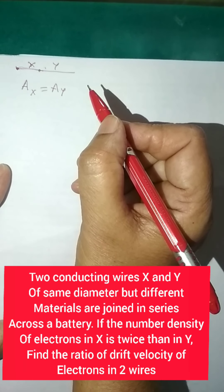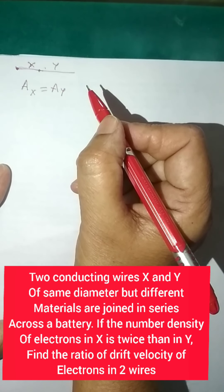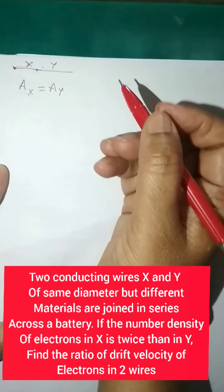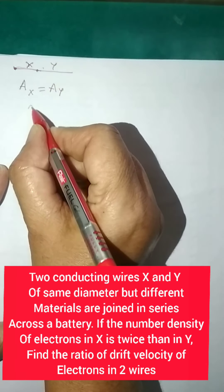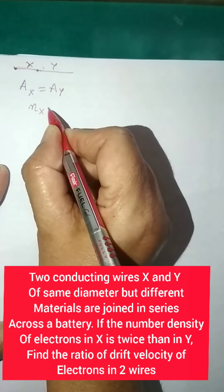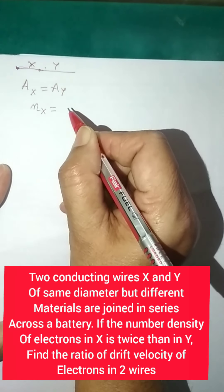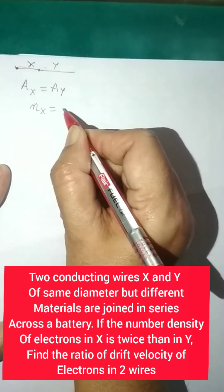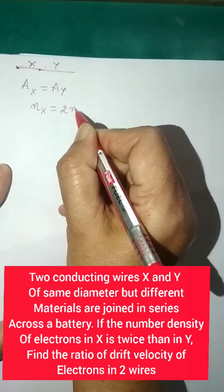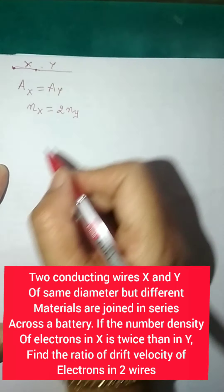If the number density of electrons in X is twice that in Y, that means the number density of electrons in X, that is small nx, is equal to twice that of Y. That means nx is equal to twice of ny.